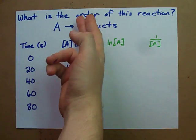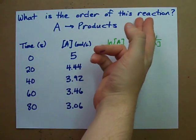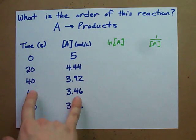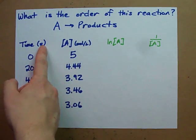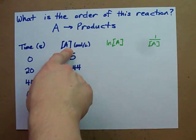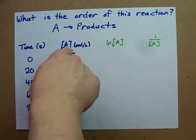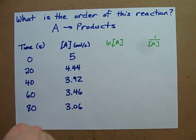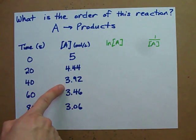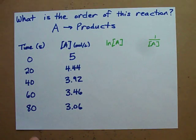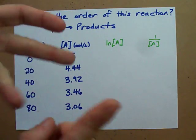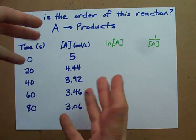How can you find the order of a reaction given only a table of data — time and the concentration of the reactant over time? Obviously as time goes on, the reactant will be consumed and the concentration will go down. But is this zero order, first order, or second order? How are you going to know?